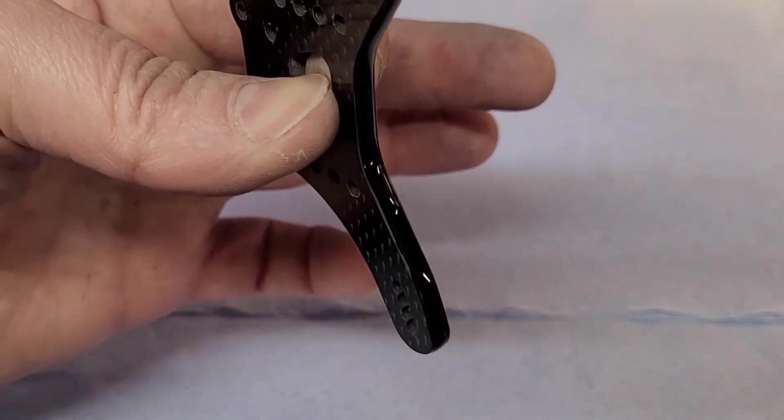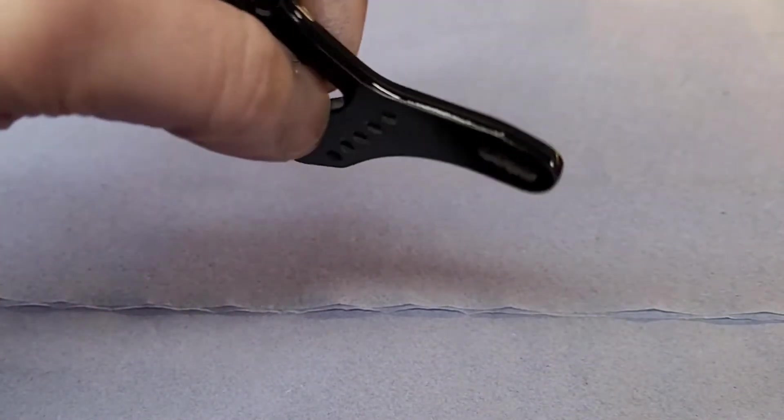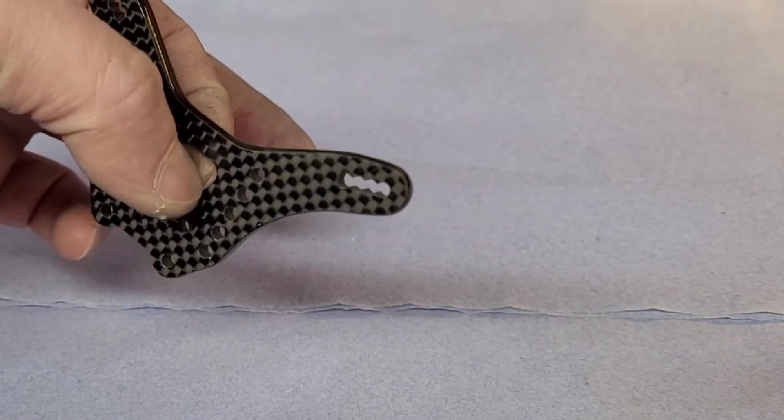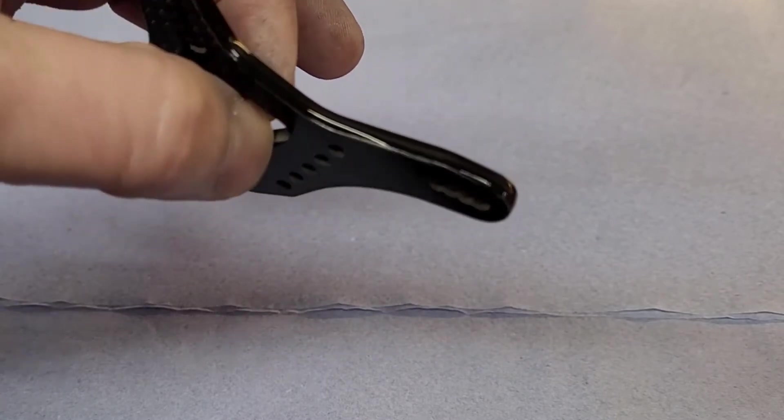And when you get to the end, you'll see it'll just keep going round. So you just want to keep going round with it until you lose that bulge, that sort of bulge of the super glue, and now you need to leave that to dry.